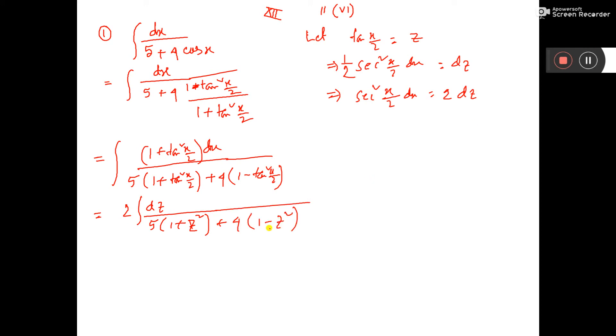Then it will come 2 into dz by 5 z square minus 4 z square, that is only z square, 5 plus 4, that is 9.